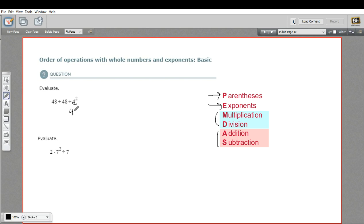And 4 squared is 4 times 4. When you have an exponent, that 2 means how many times you multiply that number by itself. So 4 times 4 is 16. So I can rewrite this problem as 48 plus 48 divided by 16.